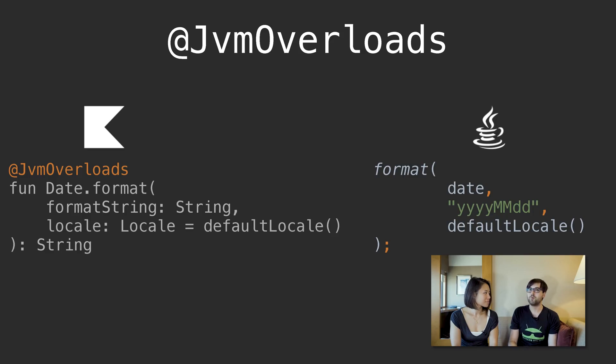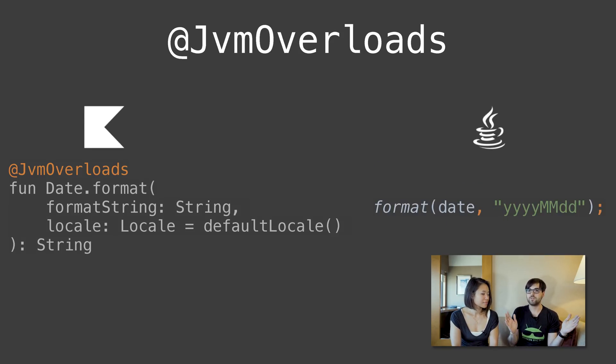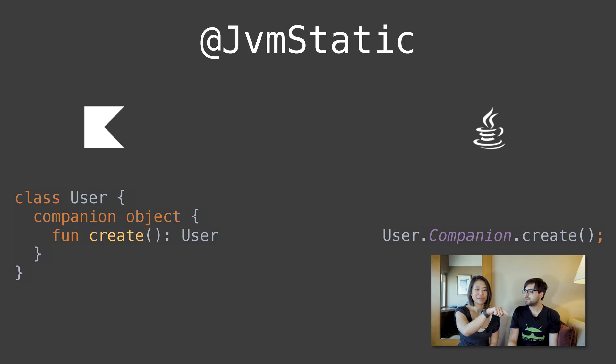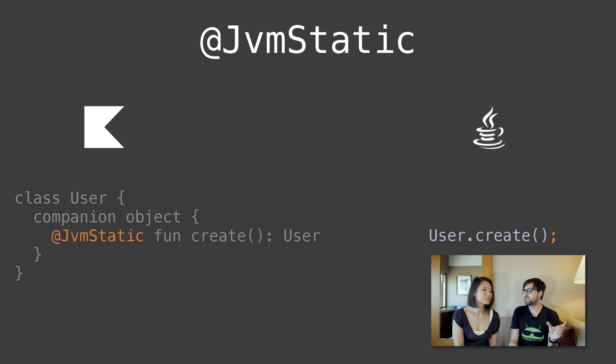So I don't have to have that really ugly companion syntax when I'm calling companion object methods from Java. I don't have to do SomeClass.Companion.blah(). Like, if you have User.create or whatever, you don't have to do User.Companion.create — you can just do User.create now because the static method actually gets exported into the byte code.